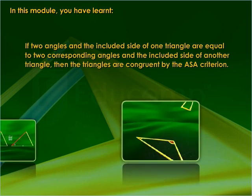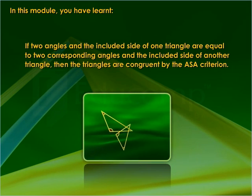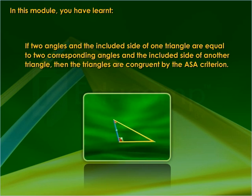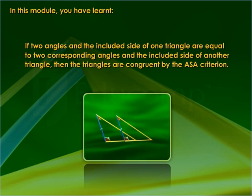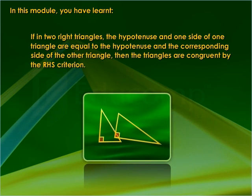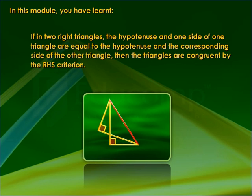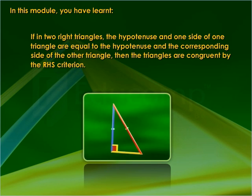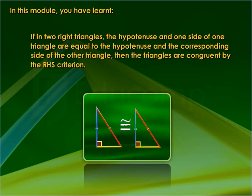If two angles and the included side of one triangle are equal to two corresponding angles and the included side of another triangle, then the triangles are congruent by the ASA criterion. If in two right triangles the hypotenuse and one side of one triangle are equal to the hypotenuse and the corresponding side of the other triangle, then the triangles are congruent by the RHS criterion.